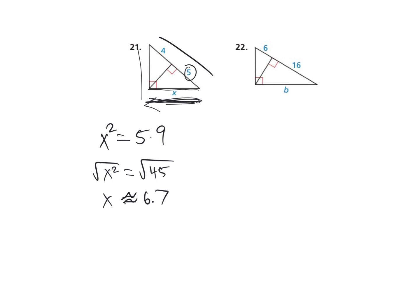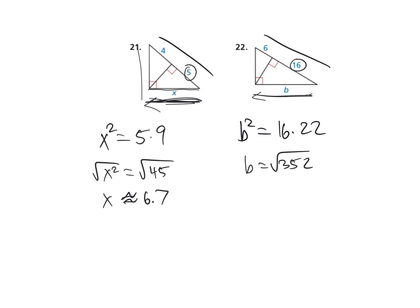Same thing on the next one, but I think we can see the longer legs here. I'll go ahead and use the formula. You go ahead and set up the three triangles and see if you can do it. This altitude: B squared is equal to the closer side times the whole side, which is 22. So B equals the square root of 16 times 22, which is 352. So B is approximately 18.8.